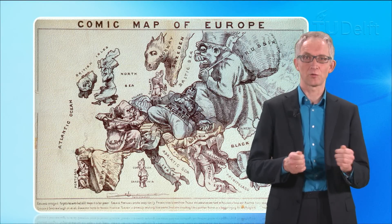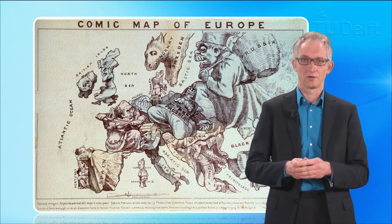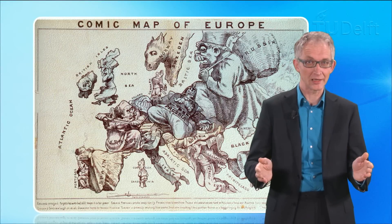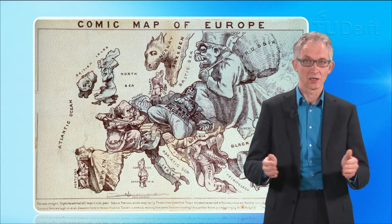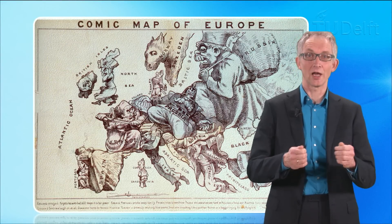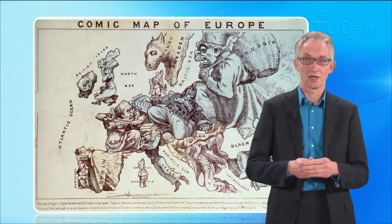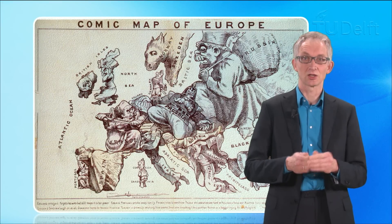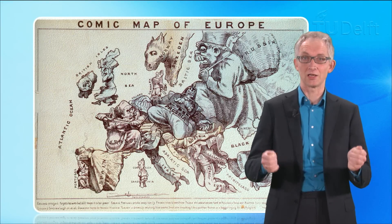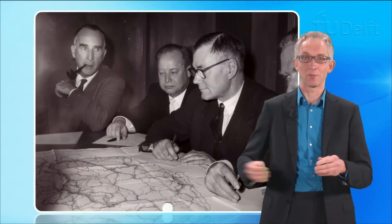The process was further complicated by two facts. First, companies were competing. And second, nation states were competing — they all had their national champions. Hence, standardization was shot through with tensions, as this comic map shows.